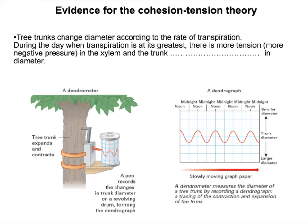Here is some evidence to show that the stem is under tension when water is leaving the plant. This experiment measures the diameter of the trunk at different times of the day. You can see that at midday there is the smallest diameter — the trunk is at its narrowest — and that is because at midday the rate of transpiration is the fastest.